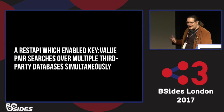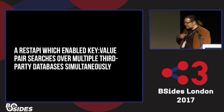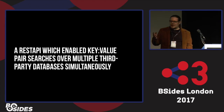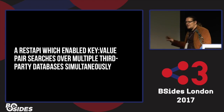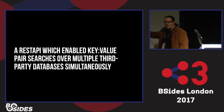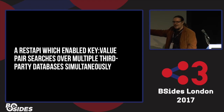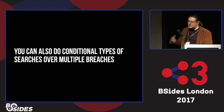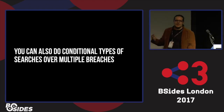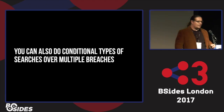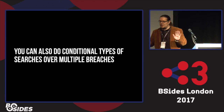We were able to search across multiple data breaches simultaneously — at the time, four different databases from leaks: Ashley Madison, Adult Friend Finder, the LulzSec Porn list, and a few other things. We were getting results back in two or three seconds. Good luck doing that with grep. It also enabled us to do conditional type searches — if this condition is mapped, then search on this. The key difference is between search and filter.